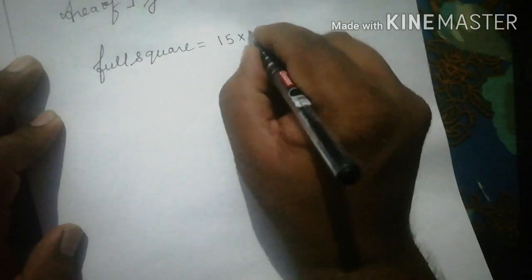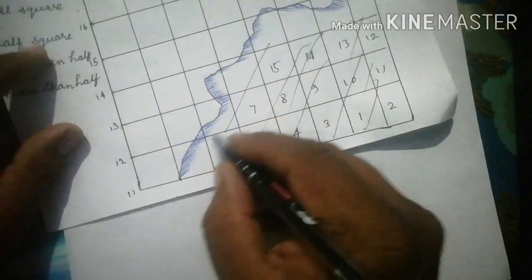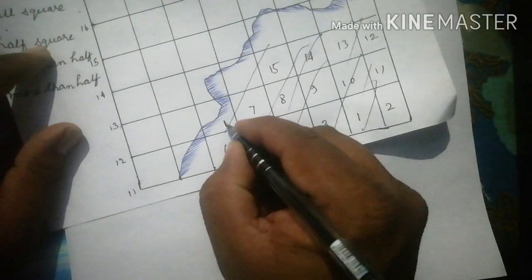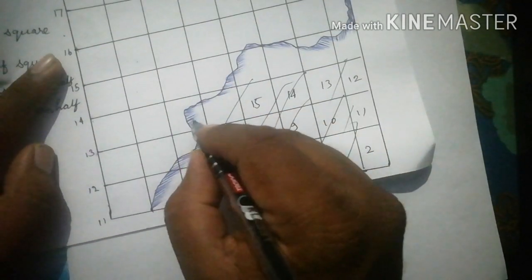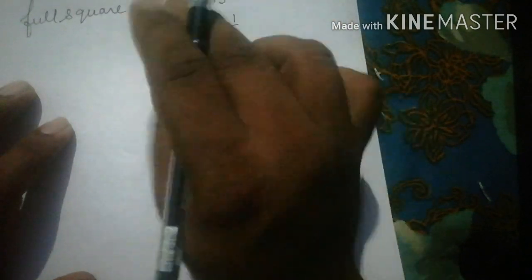Next, find the half squares — grids that are approximately half colored. In this example, there is only one such grid square. The area contribution of half squares is calculated as: number of half squares × (1/2) × 1 km². So one half square gives an area of 1/2 kilometer square.